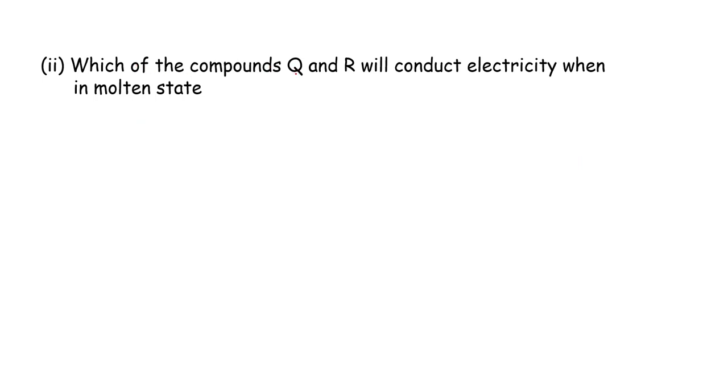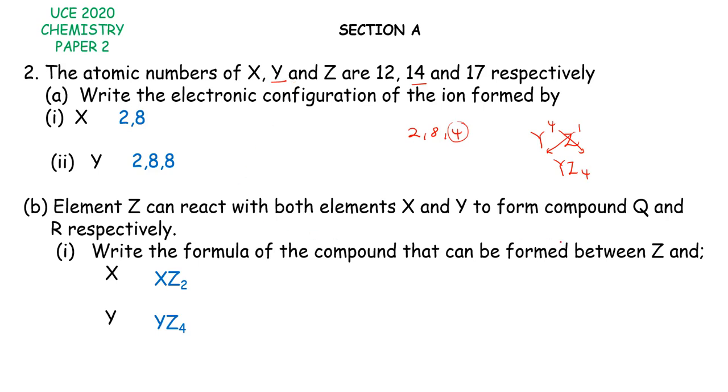Then roman 2. Which of the compounds Q and R will conduct electricity when in molten state? So for it to conduct electricity, it must be ionic. So we have to go back to our question and see, between Q and R, which one is ionic? So if you look at compound Q, it is formed between Z and X. Our X is a metal, our Z is a non-metal. And reactions between metals and non-metals, usually they are ionic.